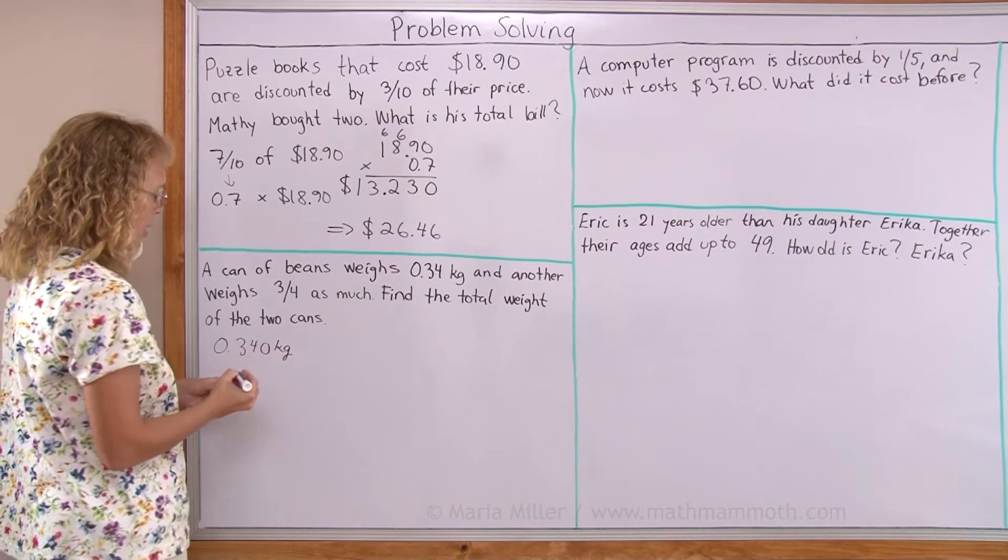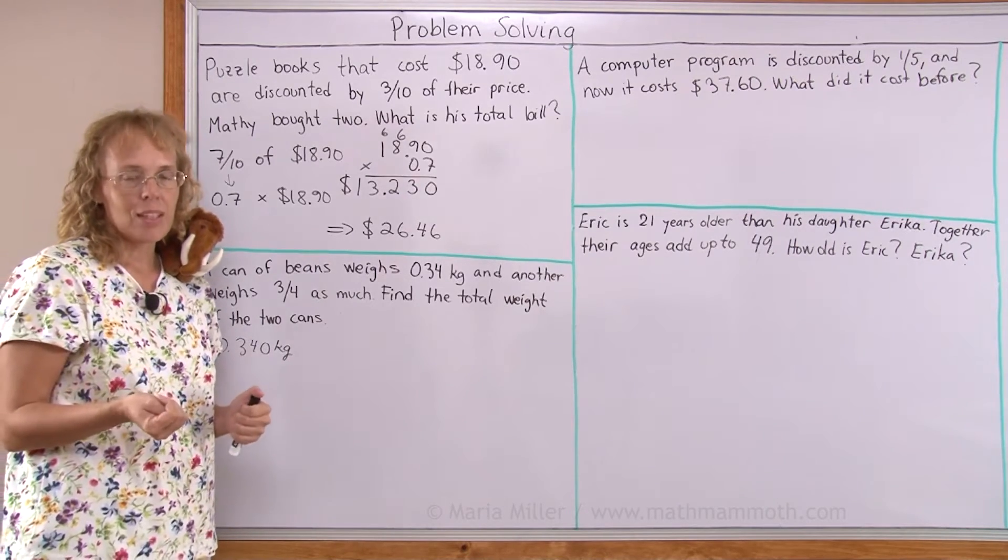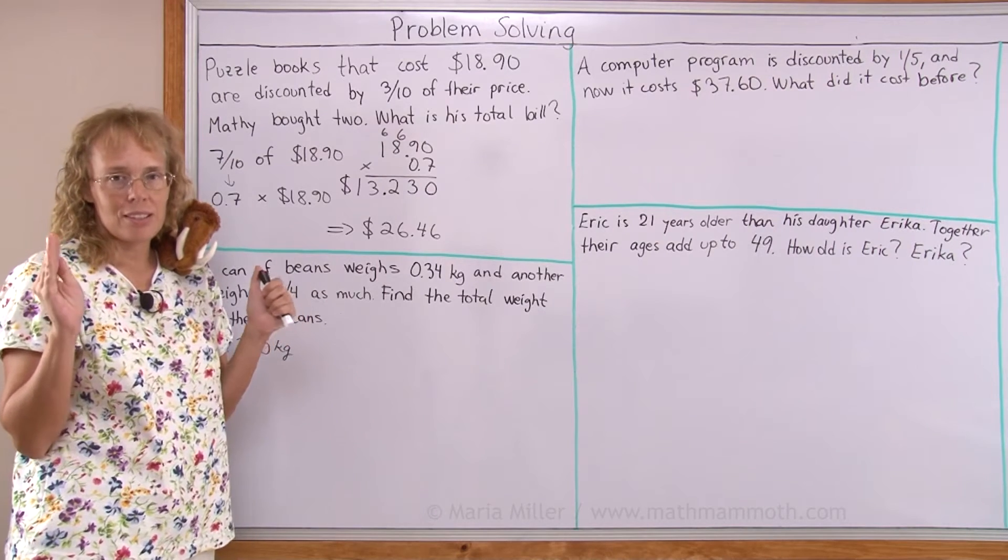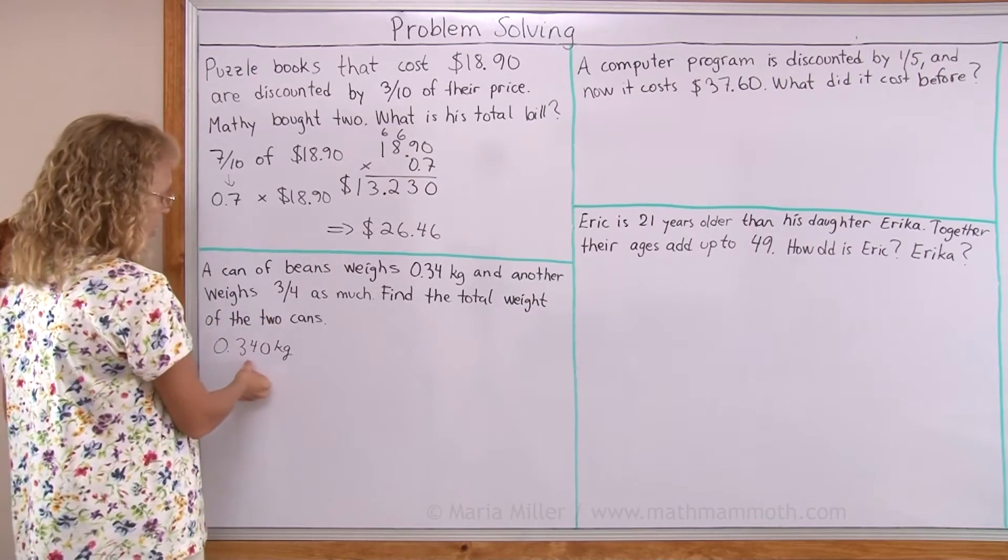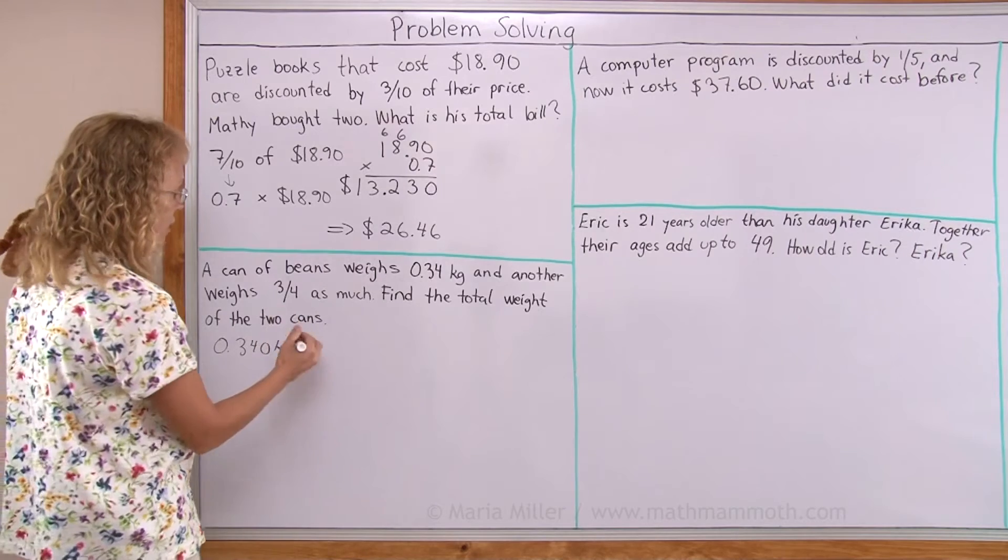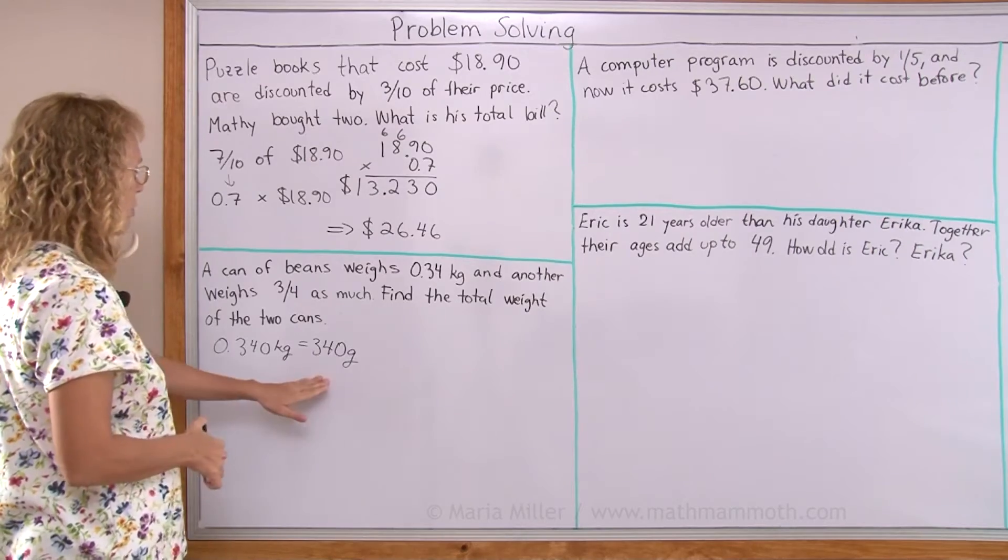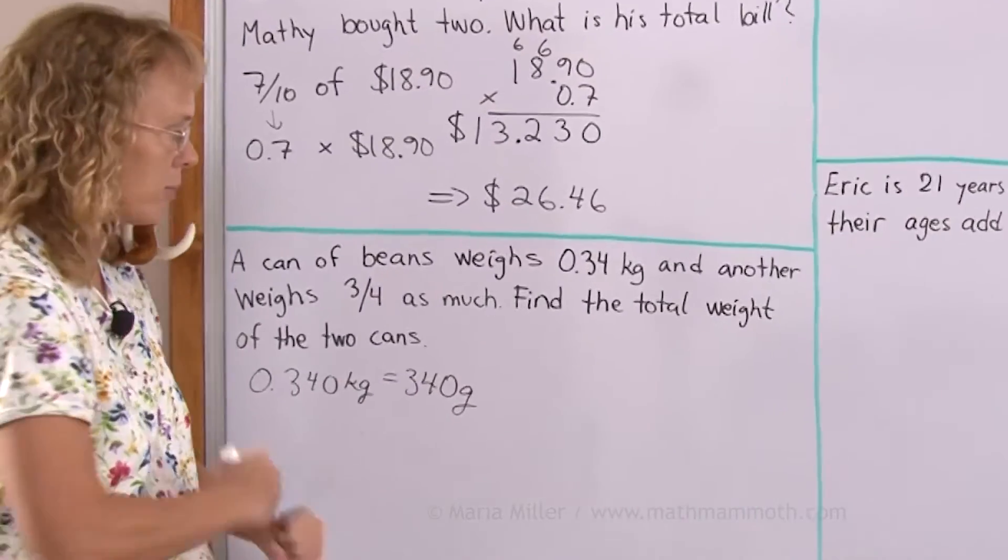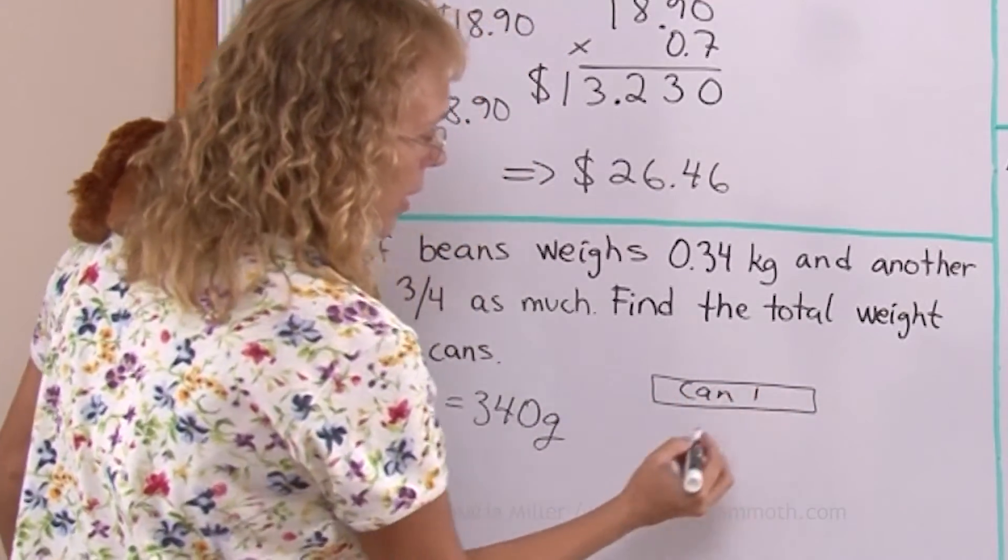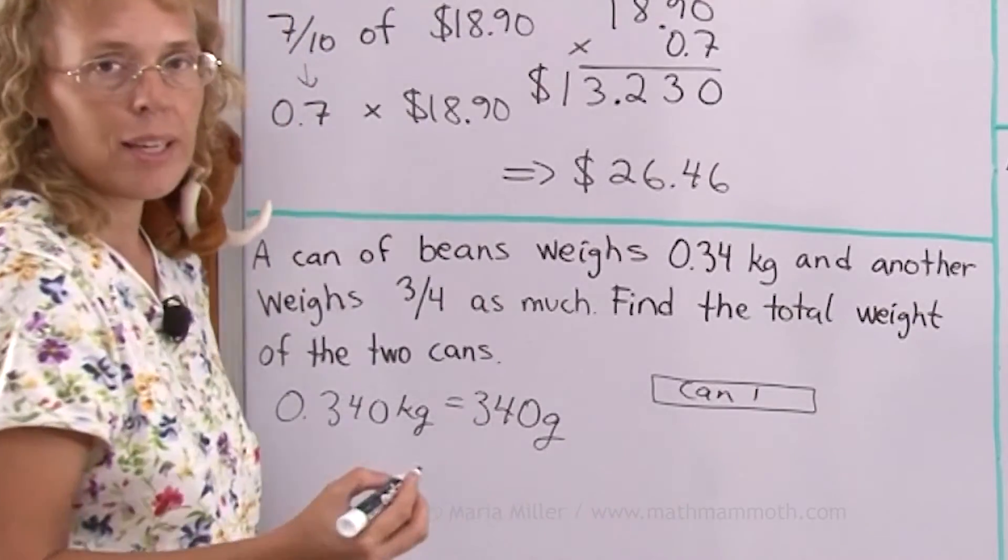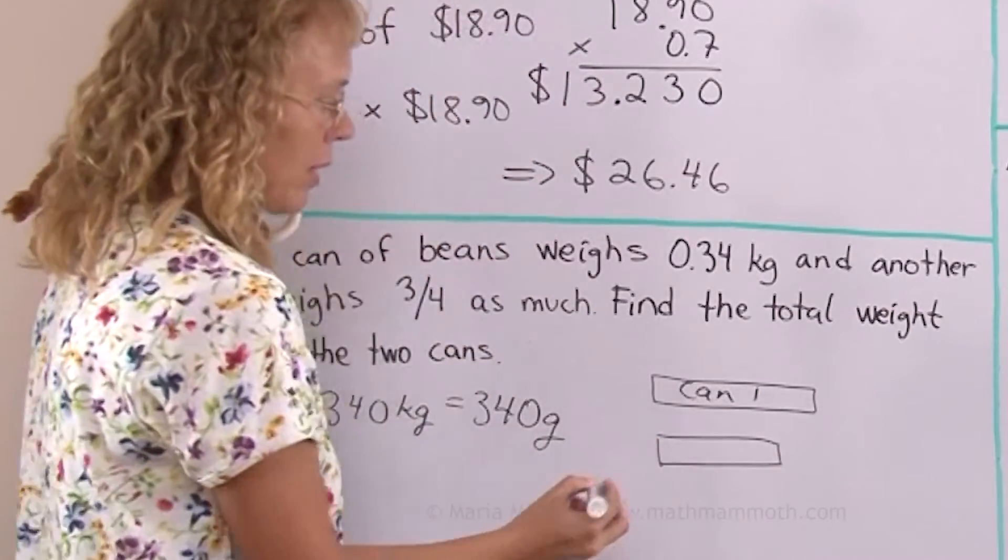Let me add a zero here because then you will see that this is 340 thousandths of a kilogram. You see a kilogram has thousand grams. So one gram is a thousandth of a kilogram. So if you have three hundred and forty thousandths of a kilogram then it is 340 grams. Maybe it's easy to solve this way and then another can weighs three-fourths as much. Now let me draw here a bar diagram. Let's say that the first can is here and that the second can doesn't weigh nearly as much. It only weighs three-fourths, three-fourths as much. This is the can 2.